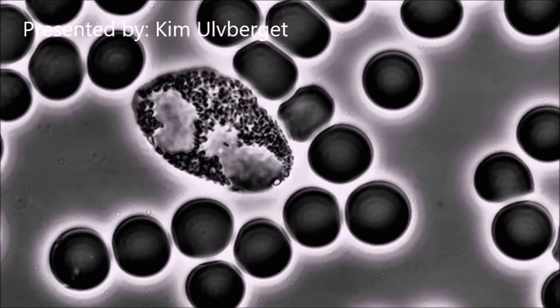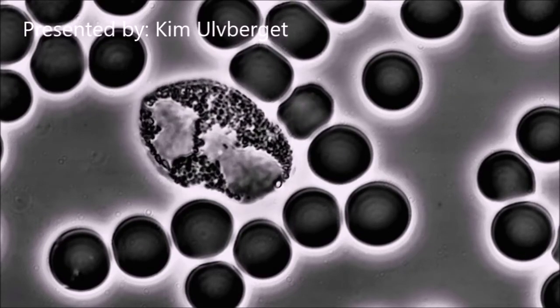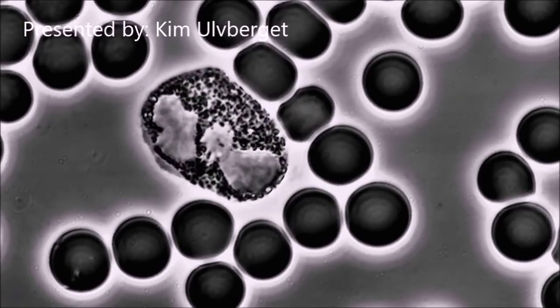Blood cells that stick together or have pointy edges or other abnormal shapes and sizes show signs of blood that has problems.